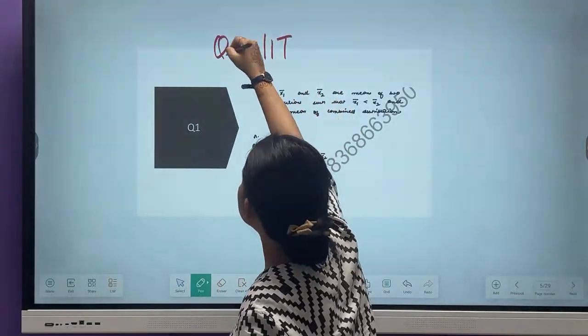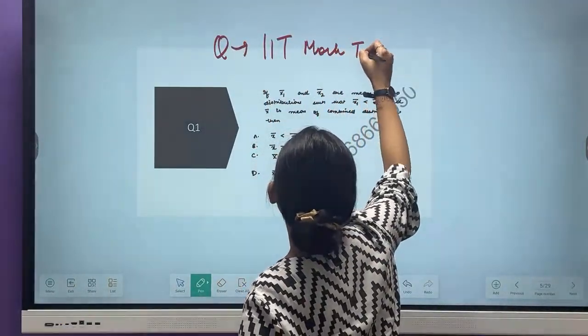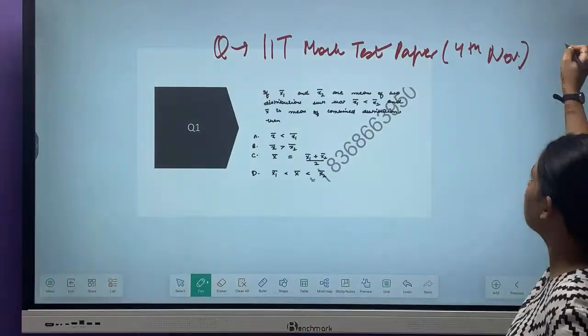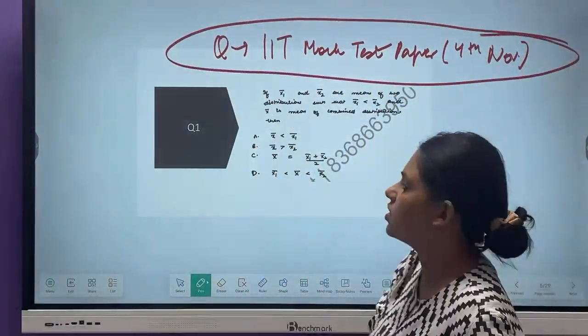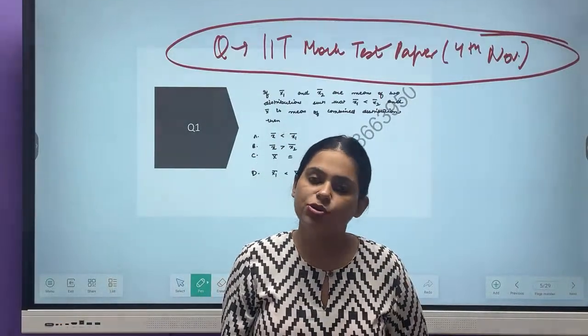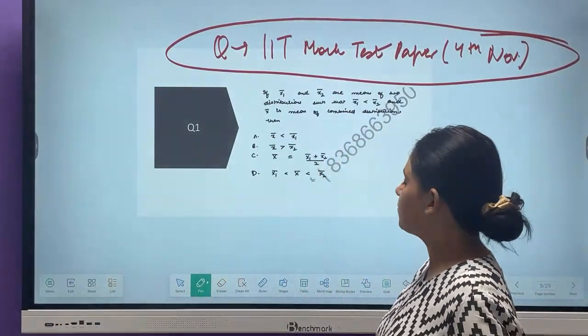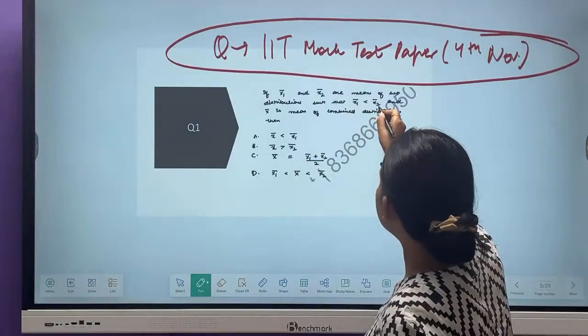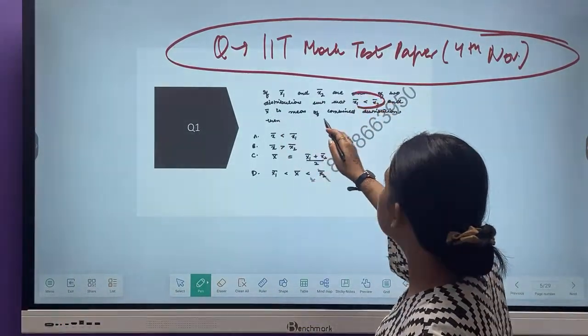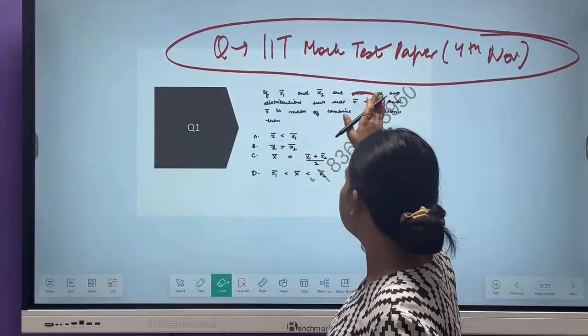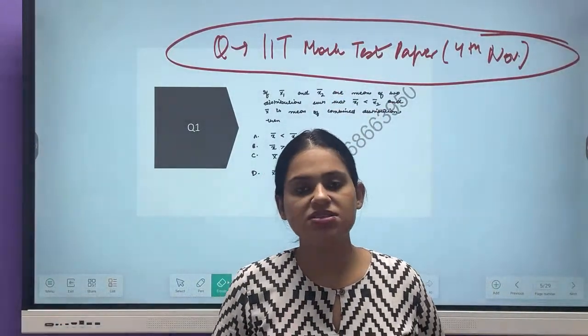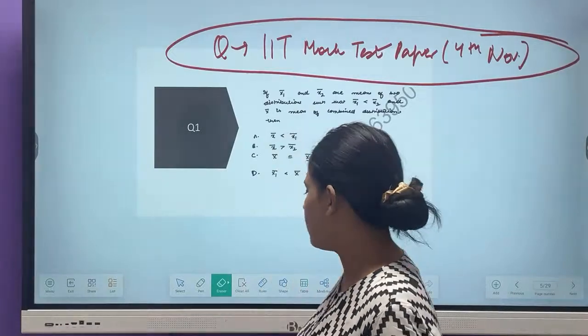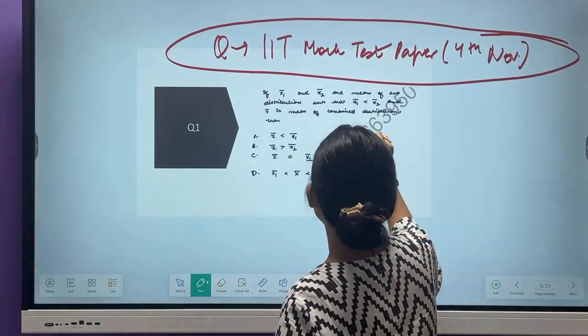Now let's start by discussing the mock test that I have given you. These are the questions from IIT mock test paper which was conducted on 4th of November. I am starting with that series and today I will take the first question. Let's read it out. X1 bar and X2 bar are the mean of two distributions such that X1 bar is less than X2 bar, and X bar is the mean of the combined distribution. When such questions come, the best thing to do is to take some series. For example, let's take series 1 as 1, 2, 3.